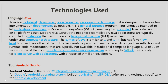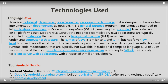Java applications are typically compiled to bytecode that can run on any Java machine, regardless of the underlying computing architecture. The syntax of Java is similar to C and C++, but has very few low-level facilities. The Java runtime provides dynamic capabilities typically not available in traditional compiled languages. As of 2019, Java was one of the most popular programming languages in use according to GitHub, particularly for client-server applications, with a reported 9 million developers.